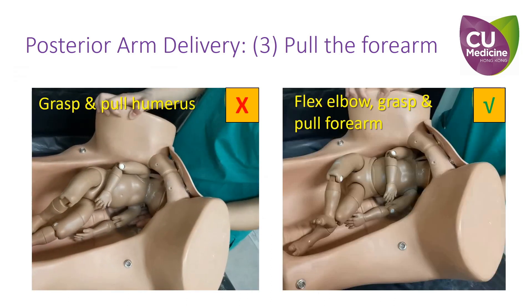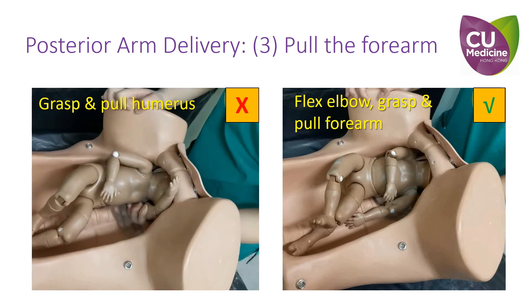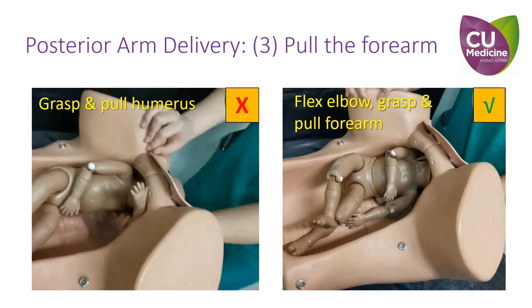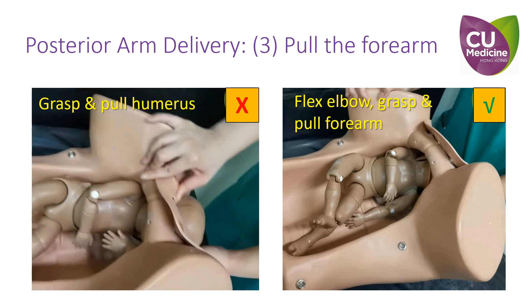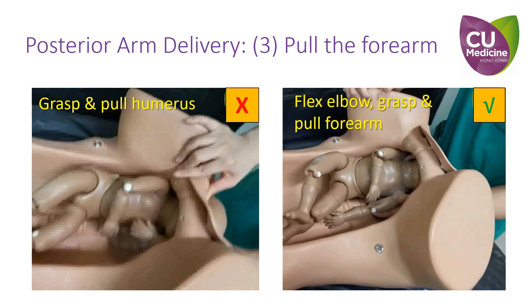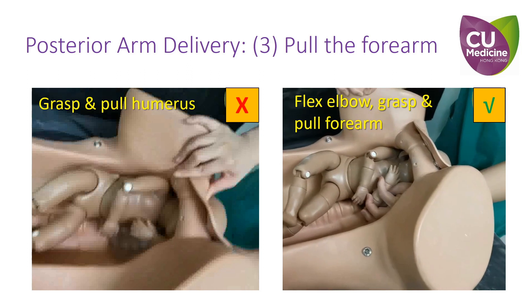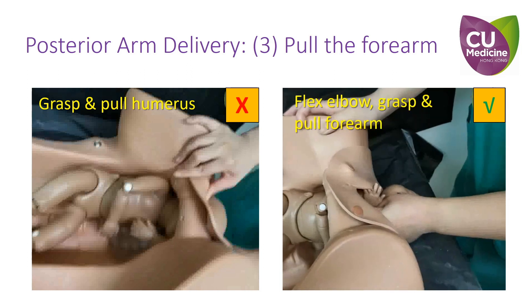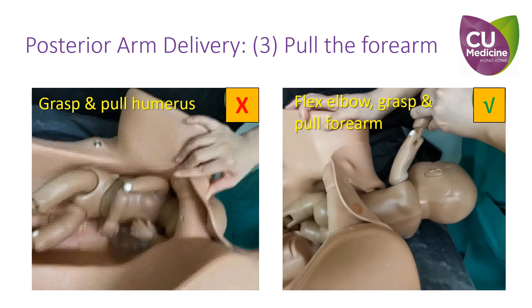The first video on the left demonstrates the poor technique of grasping the upper arm when delivering a shoulder dystocia with an extended posterior arm, which increases the risk of fracture and is less effective. The second video on the right demonstrates the preferred technique of tracing the upper arm down to the level of the elbow, then flexing the elbow to bring forward the forearm, followed by traction and rotation to facilitate delivery.